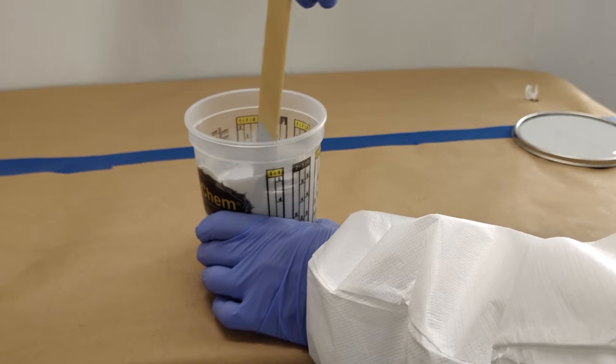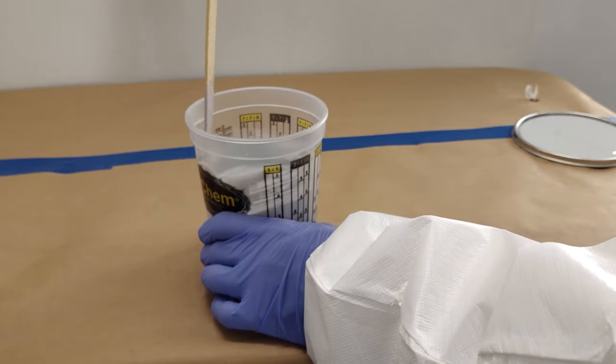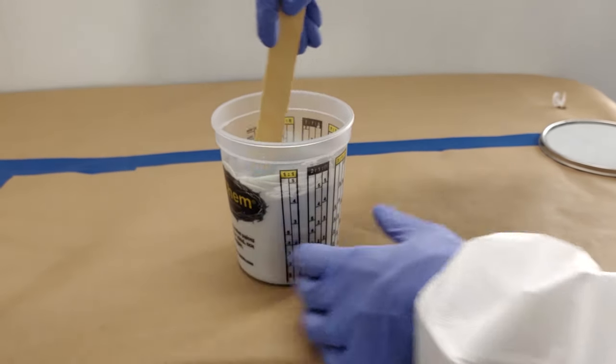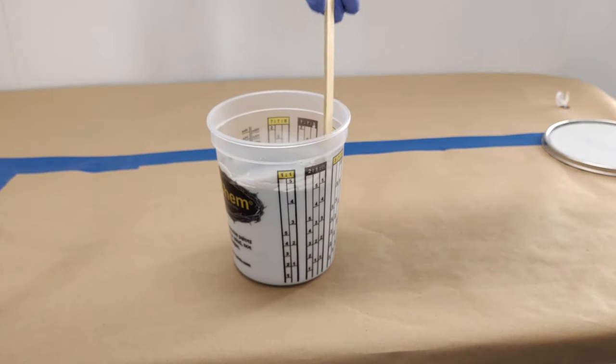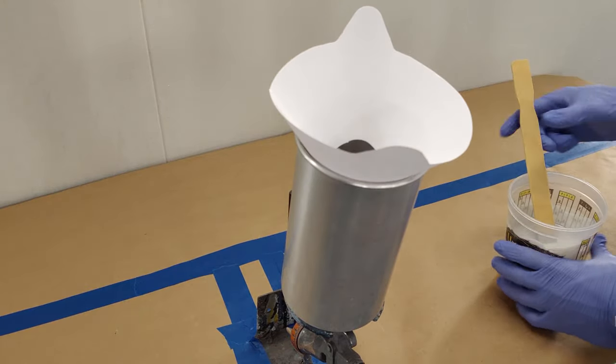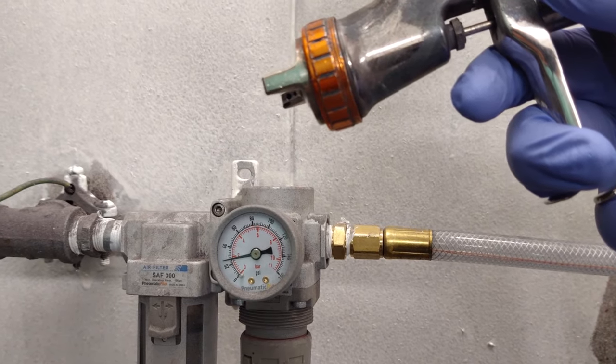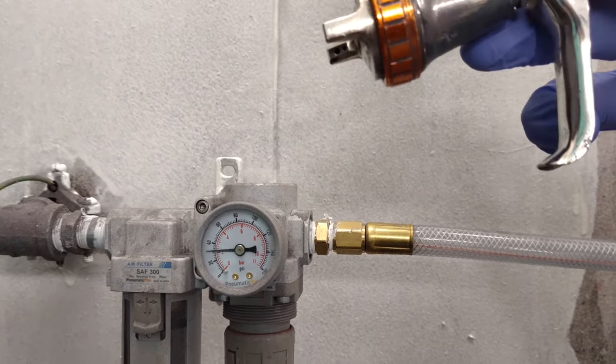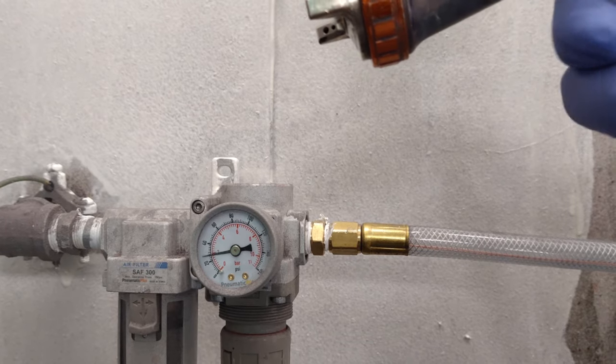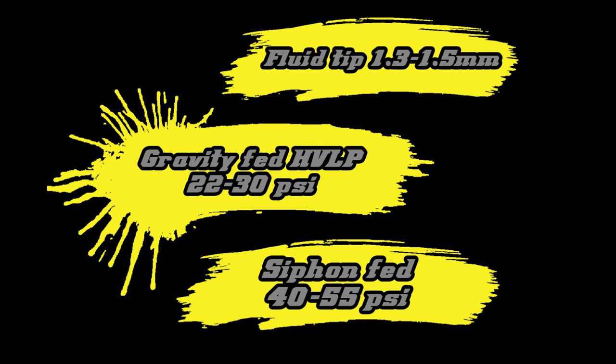Once you have added the primer and activator, mix well with a paint stick, scraping the sides and bottom of the cup occasionally to ensure all the material is thoroughly mixed. For best atomization and flow and leveling, we recommend 1.3 to 1.5 millimeter fluid tip and spray pressure set to 22 to 30 psi at the trigger for gravity-fed HVLP spray guns or 40 to 55 psi for siphon-fed spray guns.